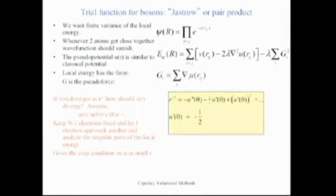Imagine you have marbles in a box with a repulsive potential. What kind of wave function would you want? You want a wave function so that particles don't get close together. This is the form you want — it's like the classical distribution of particles interacting with a potential U. But U here is the wave function, not the potential. This is a general rule: you make a wave function that looks like the potential.